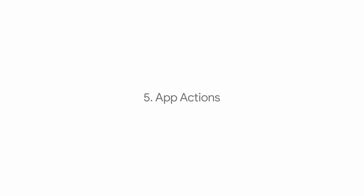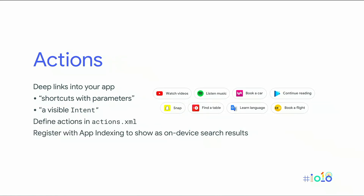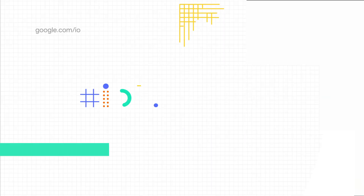Related to slices is actions. You can think of these as shortcuts with parameters — or visible intents. This is essentially a deep link into your app with some additional payload. It's not just a link to music; it's a link to a particular album or something like that. You saw these in the keynote showing up in a predictive space inside our app launching experience. Actions are defined in an actions XML file that goes into your APK or app bundle, and that too can get registered with app indexing so that search results and predictive features can show those actions.